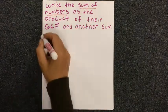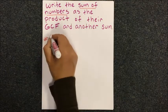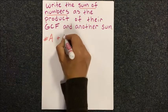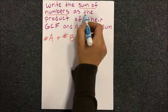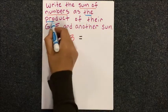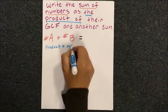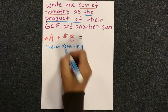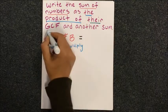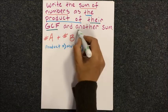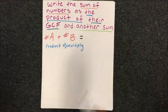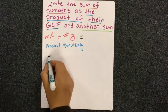First of all, the sum of numbers means we're adding numbers together, which we'll call A and B. Product means multiplication. The GCF we'll find by listing factors, and another sum means we'll have some other kind of addition happening.